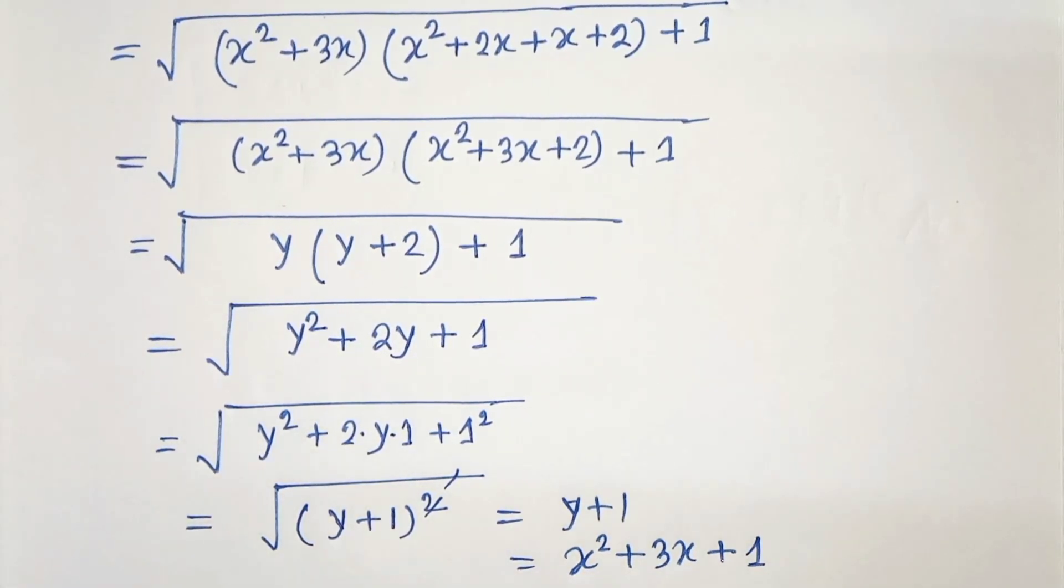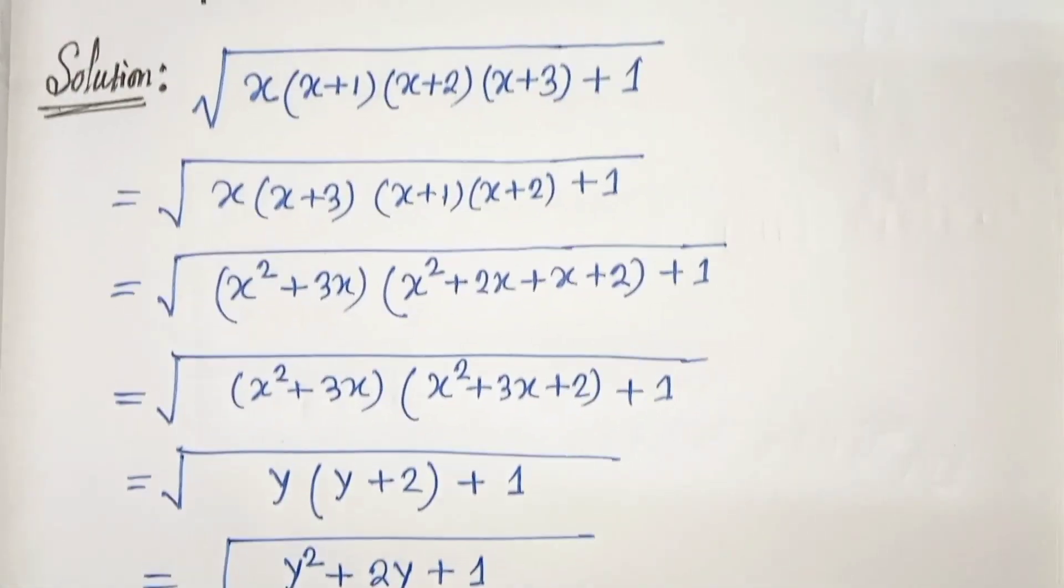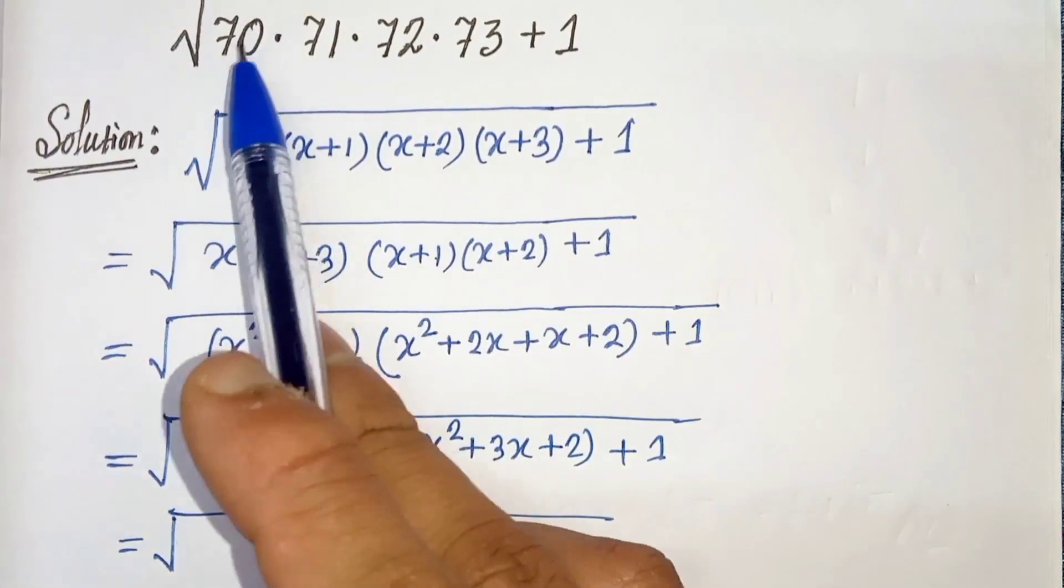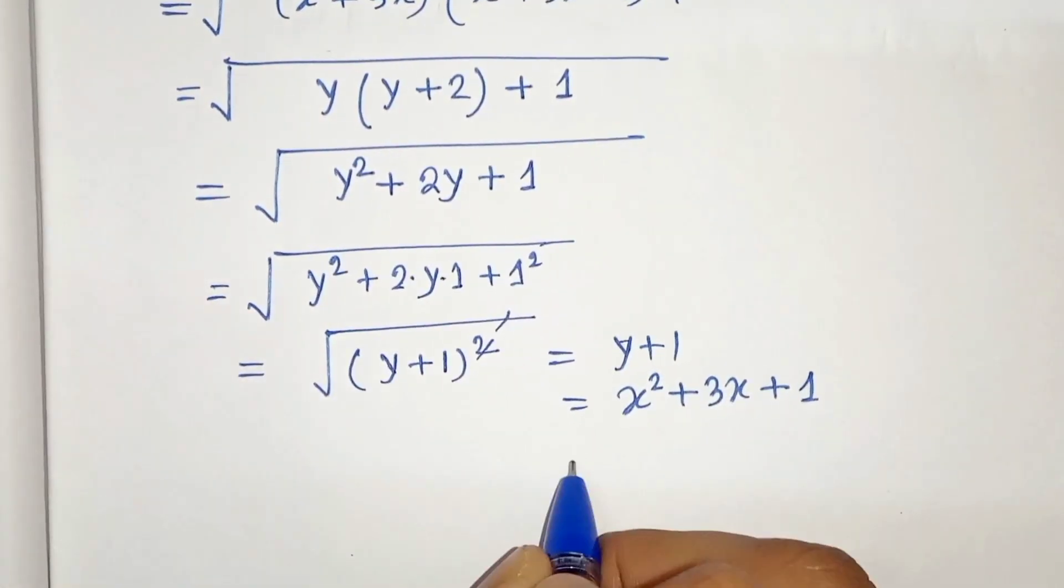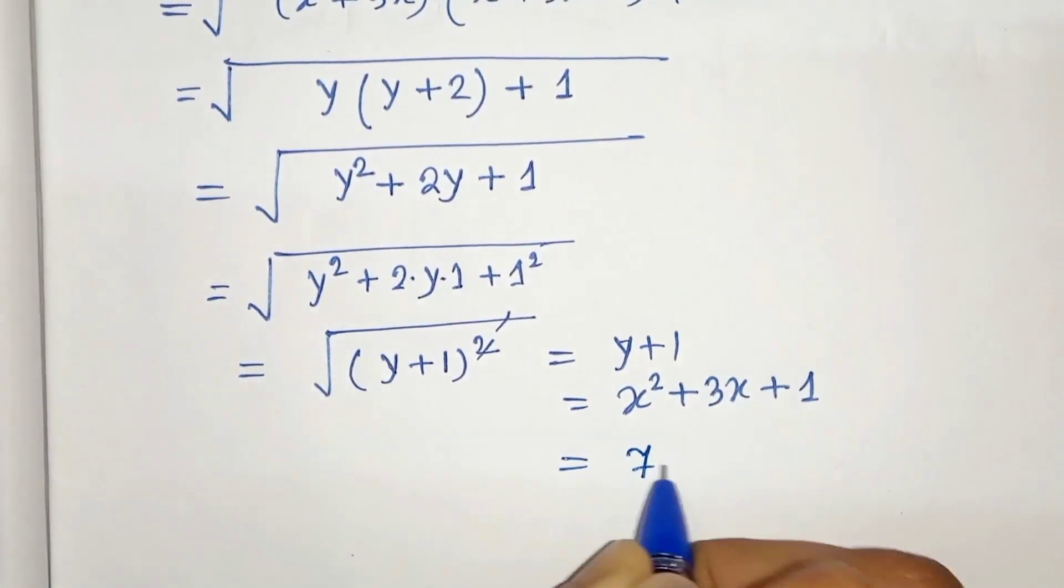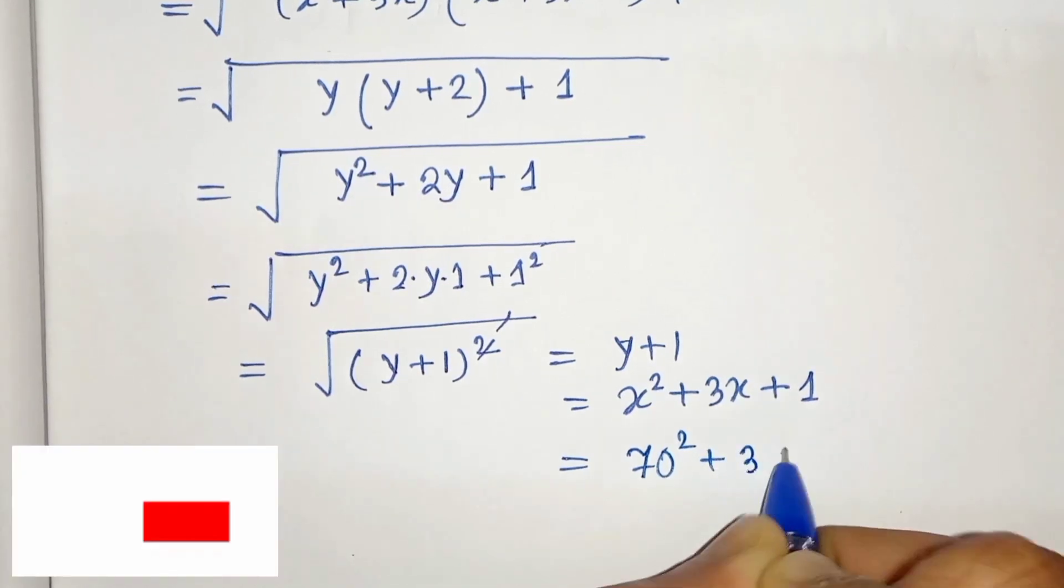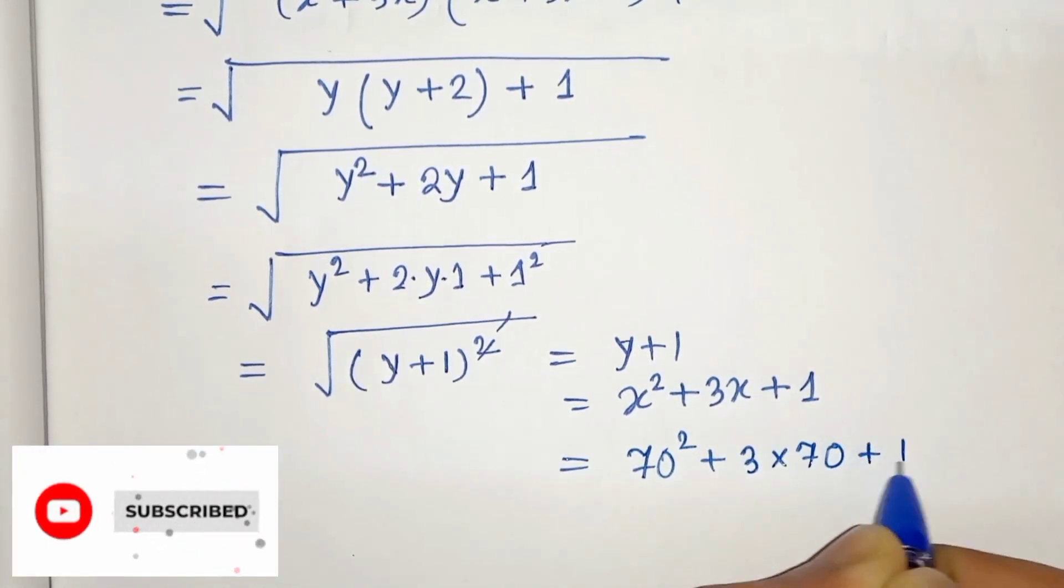Now let's replace the value of x, which is 70. So let's replace this. 70 squared plus 3 times 70 plus 1.